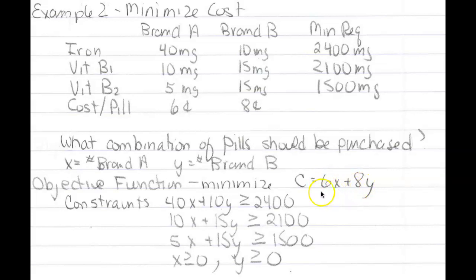Our constraints: 40X plus 10Y has got to be greater than or equal to 2,400. 10X plus 15Y has got to be greater than or equal to 2,100. 5X plus 15Y has got to be greater than or equal to 1,500. And X and Y both need to be greater than or equal to 0.